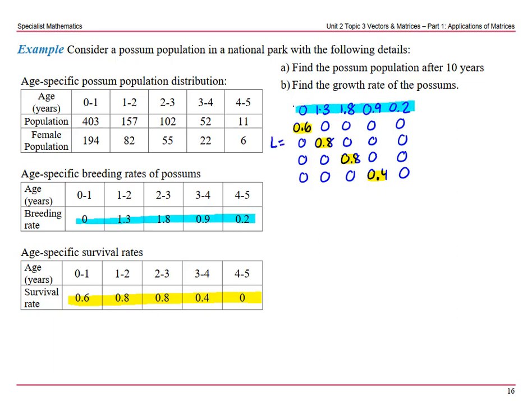So that's L. My initial population - we only want females - so 194, 82, 55, 22 and 6. You can also see because they've given us the total population that those numbers are approximately half.